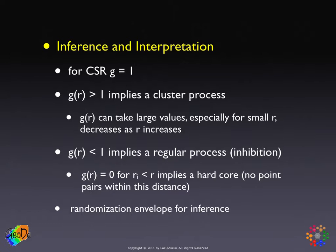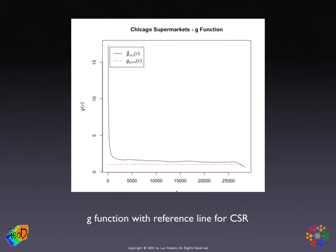The interpretation of significance is the same as before — this is too complicated analytically, so we resort to randomization and the randomization envelope following the same principles. We create many random patterns, compute the function for each, and for each distance take the smallest and the largest to constitute the envelope. For our Chicago supermarket example, we see very high values for very low distances, which then drops off and decreases, and it's mostly above the line at one — the red dashed line — except for very large distances. This is a typical feature for a clustered pattern.